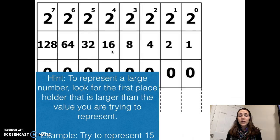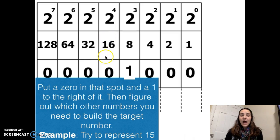Here's a few more hints. In order to represent a large number, look for the first placeholder that is larger than the value you're trying to represent. For example, if I'm trying to represent the number 15, I want to look right here at this spot where there's a 16. What you'll do is put a 0 in that particular spot and a 1 directly to the right of it. Then you can figure out what variation of the rest of the numbers to the right that you'll need in order to build your target number.